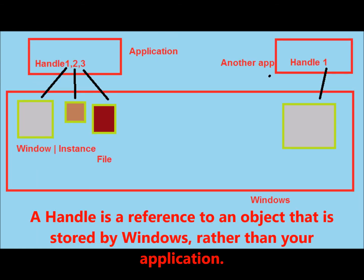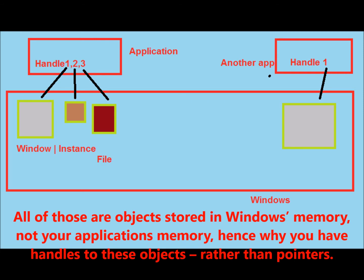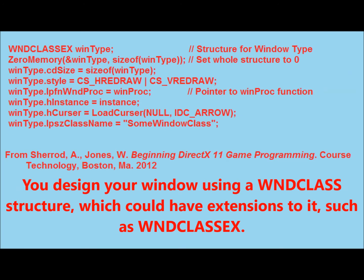A handle is a reference to an object that is stored by Windows rather than your application. There are handles for a lot of resources, such as actual windows, instances of an application running, files, etc. All of those objects are stored in Windows's memory, not your application's memory, hence why you have handles to these objects rather than pointers.